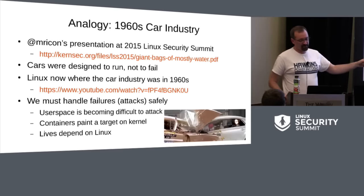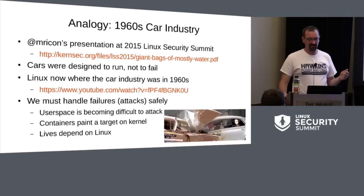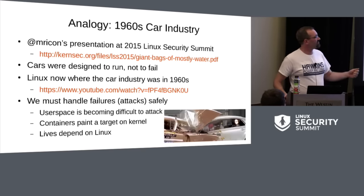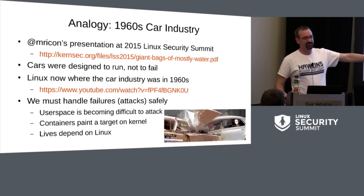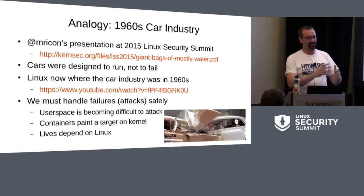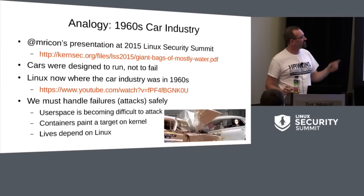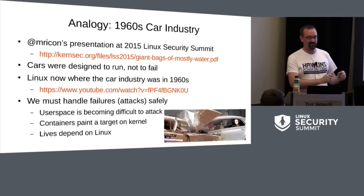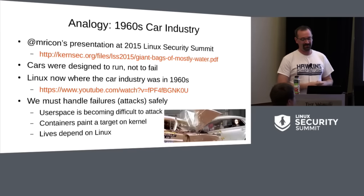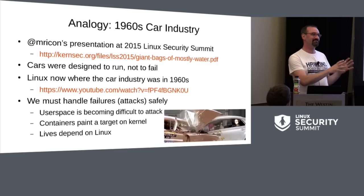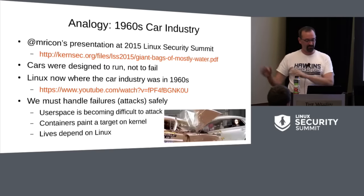There's a photo of a 1959 Bel Air crashing into a 2009 Chevy Malibu, where the '59 is utterly decimated — the entire front end and passenger compartment is destroyed — while the Chevy's cabin is okay. This is what we want to get to in our comparison from the 1960s car industry to current software ecosystems. We want to make Linux much more survivable.